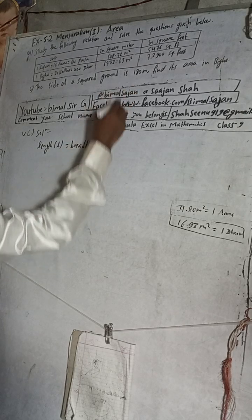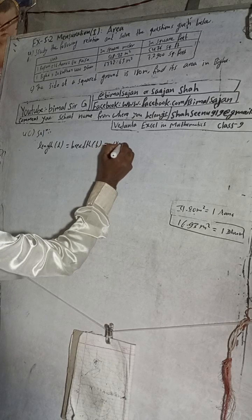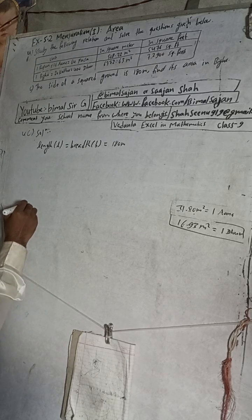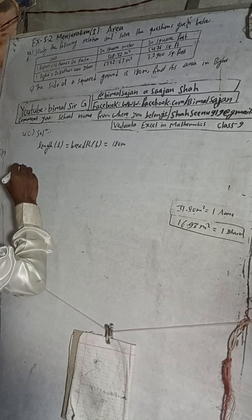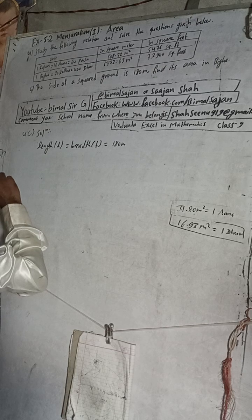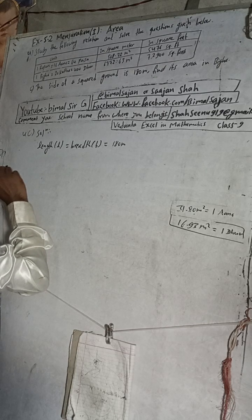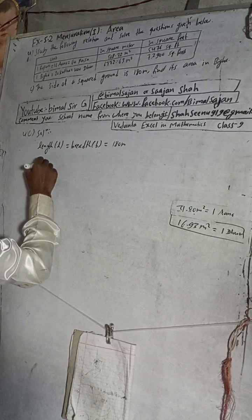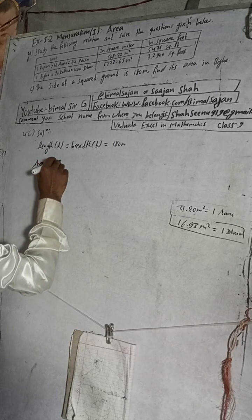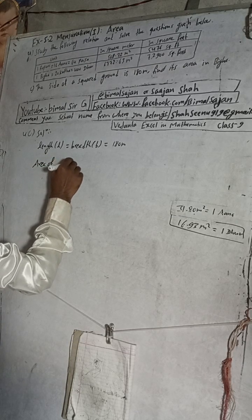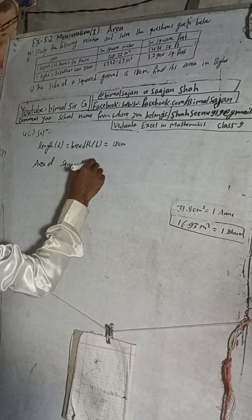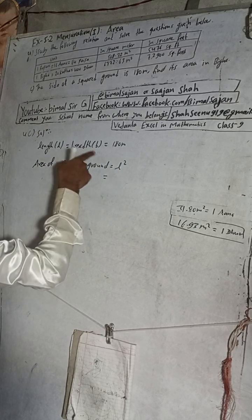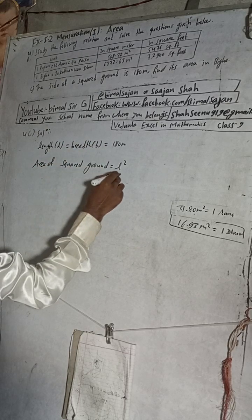Let the side be 180 meters. So, the area of the square ground — the square is highlighted in yellow — and the side is 180 meters. So, area of square ground equals 180 squared.